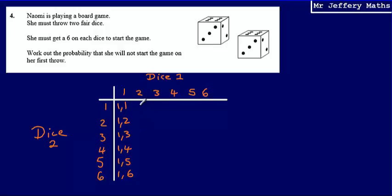I could go on filling this out—a two on dice one and a one on dice two, then a two and a two. I could continue filling this out, but hopefully you can see what is going to happen here.